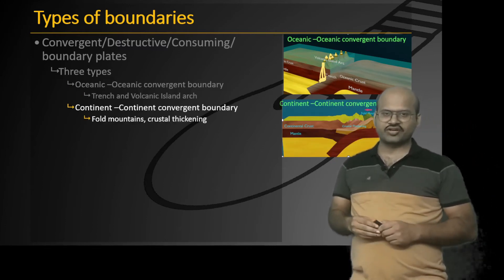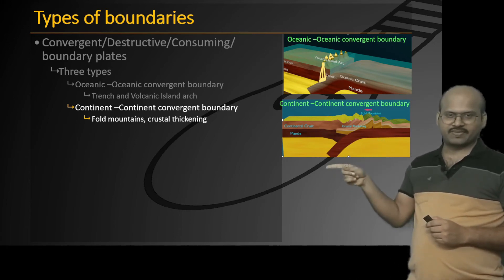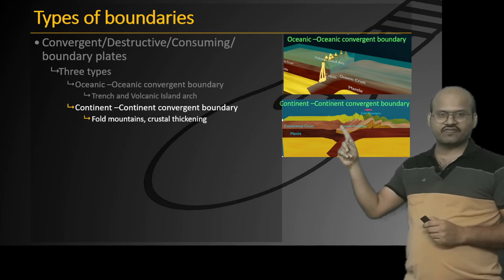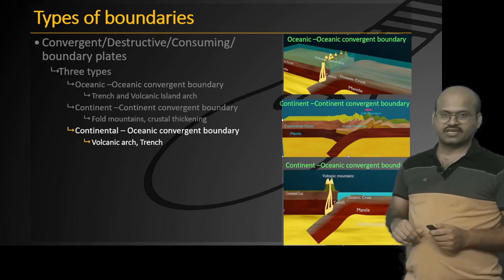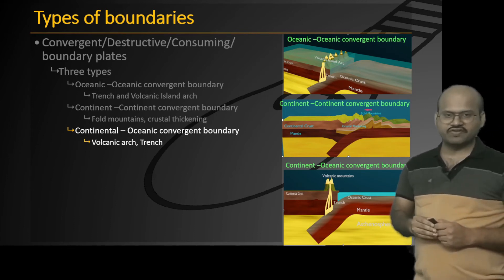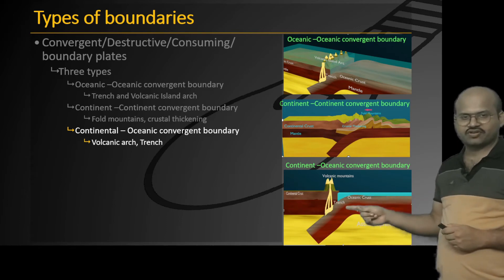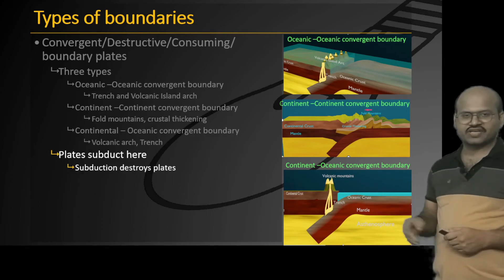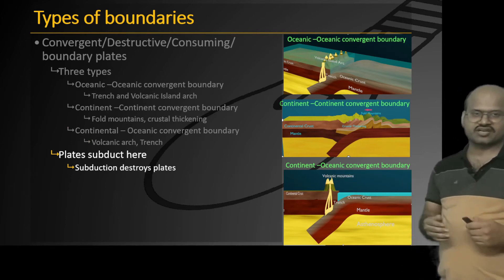The next is continent-continent convergent boundary, where two continental plates move towards each other. The mantle subducts at the margin, but the continental crust does not subduct — instead it is added to the other plate's continental crust, overall thickening it. This is called crustal thickening, and fold mountains are formed here. The next is continent-oceanic convergent boundary, where an oceanic plate moves toward a continental plate — a trench forms, volcanic activity occurs, and volcanic mountains are formed. At convergent boundaries, plates are subducted and destroyed, which is why they are called destructive or consuming boundaries.